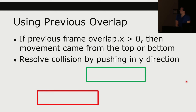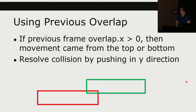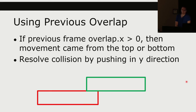Similarly, if on the previous frame we have an overlap in the x direction but not the y, then we know the movement came from the y direction and so we can push it up. This is going to afford us the resolution that we actually want in assignment 3.